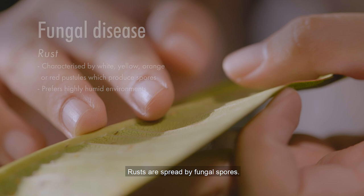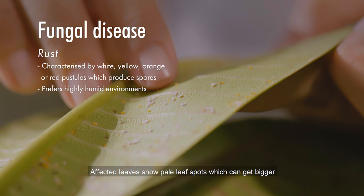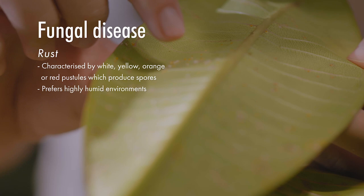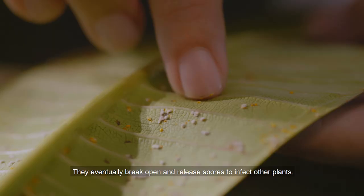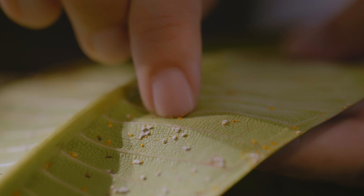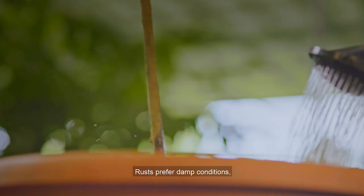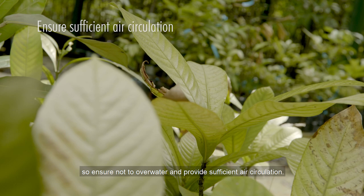Rust is spread by fungal spores. Affected leaves show purple leaf spots which can get bigger and turn into bumpy-looking pustules. They eventually break open and release spores to infect other plants. Rust prefers damp conditions, so ensure not to overwater and provide sufficient air circulation.